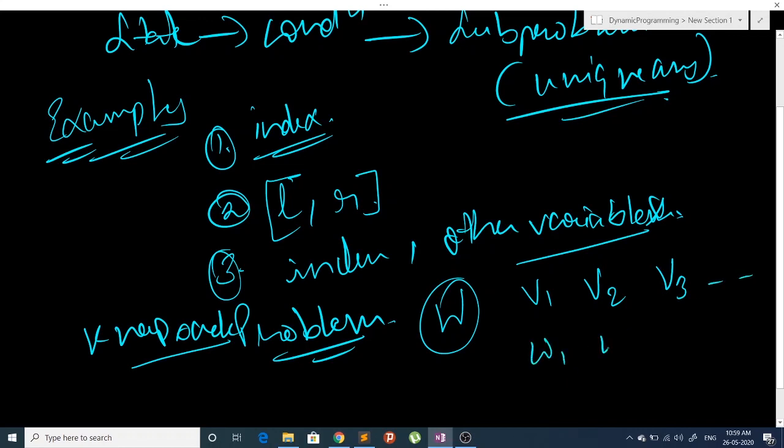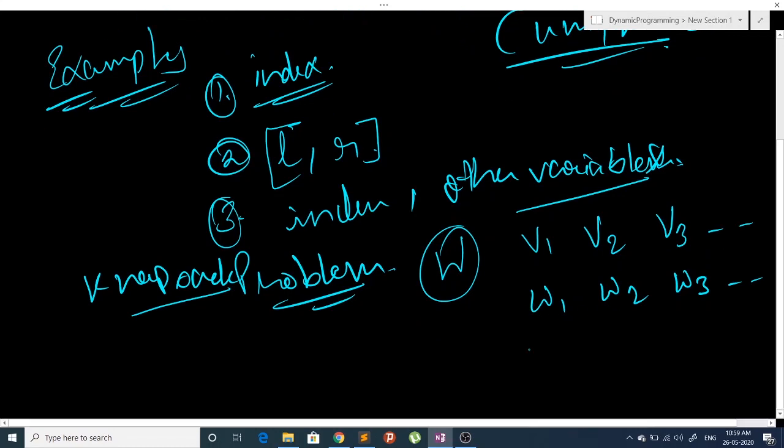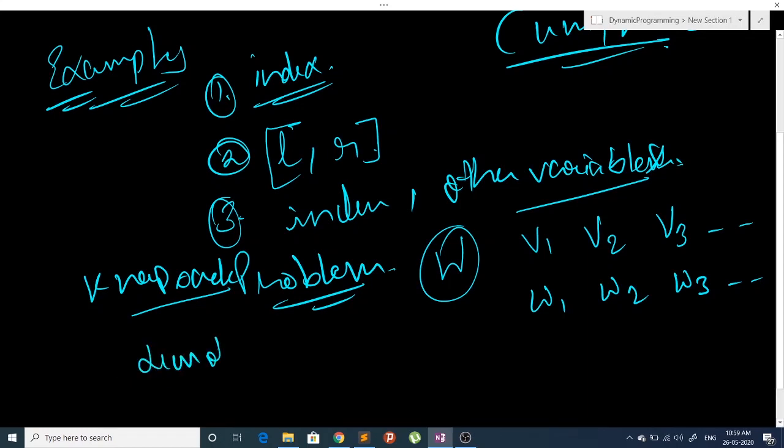Now the problem says that we have to find some objects such that sum of values is maximized and the total weight should be less than or equal to W.